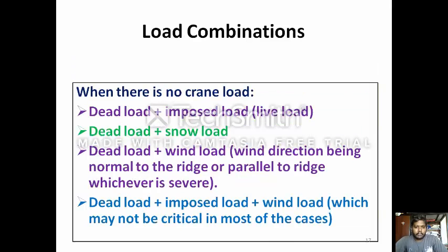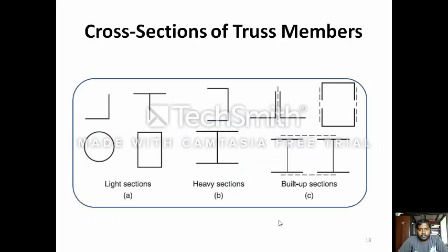Load combinations: When there is no crane load, the combinations are dead load plus imposed load, dead load plus live load, and dead load plus wind load — normal to the ridge, parallel to the ridge — whichever is more severe. Dead load plus imposed load plus wind load may also be considered, though this may not be critical in most cases.